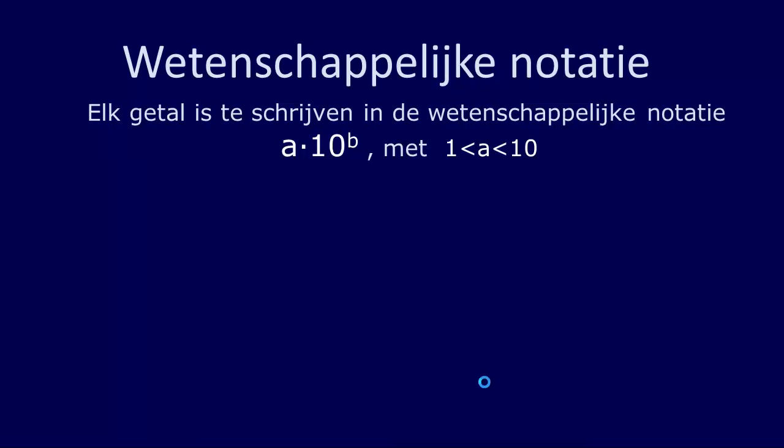In de natuurkunde werk je vaak met hele grote of hele kleine getallen. En dan is het erg handig om die grote of kleine getallen op te schrijven volgens de wetenschappelijke notatie. Wat houdt de wetenschappelijke notatie in? Dat houdt in dat je het getal opschrijft in de vorm a maal 10 tot de macht b, waarbij a tussen de 1 en de 10 is, en b een geheel getal.